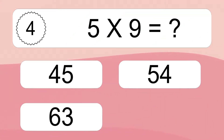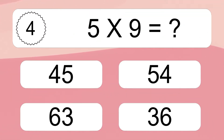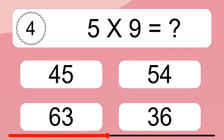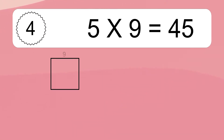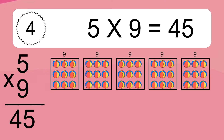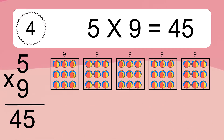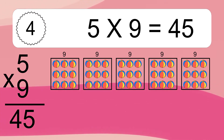Five times nine equals what? Five times nine equals 45. We have five boxes, and each box has nine colorful balls inside. If you count all the balls in all the boxes together, you will have five times nine balls. This equals 45 balls.